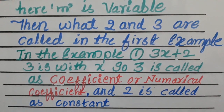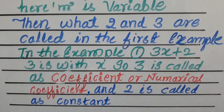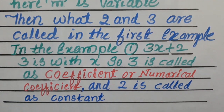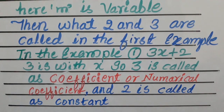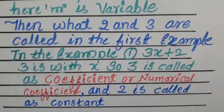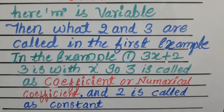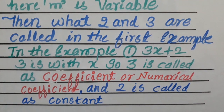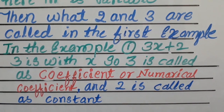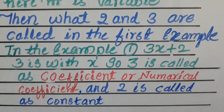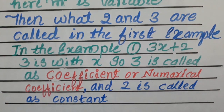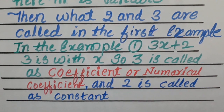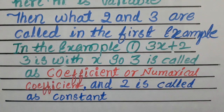In 3x plus 2, the 3 is the coefficient. But 2 is also a number — however, 2 is not called the coefficient. It is called the constant. The coefficient is always present with a variable, like 3 is present with X. So 3 is the coefficient and 2 is the constant.